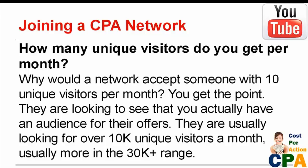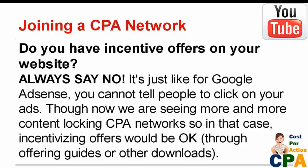They're usually looking for over 10,000 unique visitors per month, more in the 30,000-plus range. But as I showed you in the previous modules, you can easily drive that kind of traffic if you know how to do YouTube marketing the right way. The next question they're going to ask is: do you have incentive offers on your website? You always want to say no to that question. Just like with Google AdSense, you can't tell people to click on your ads. With CPA offers it's the same — though there are more content-locking CPA networks coming up where incentivized offers would be okay, for traditional CPA networks always check off no.